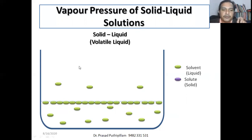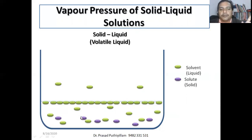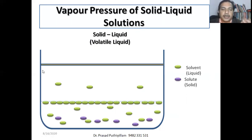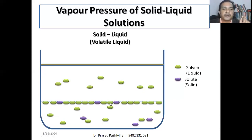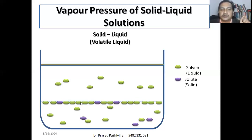On adding the solute molecule, it will go into the solution — it will mix with the solvent, form intermolecular interactions with the solvent molecule, and dissolve. Since the liquid is volatile in nature, let us consider a closed container. Some of the liquid molecules from the surface will try to escape, and those positions will be replaced by either solvent molecules or solute molecules.